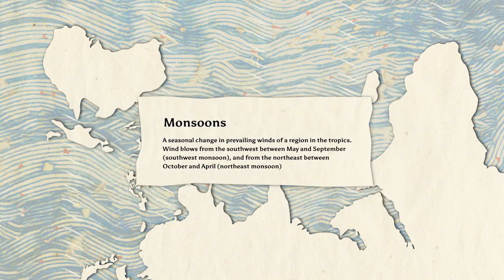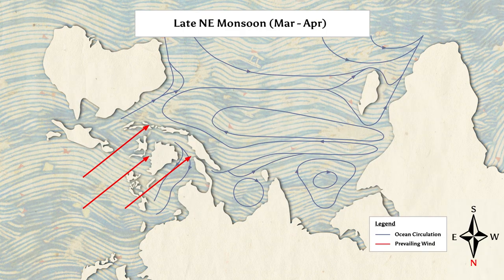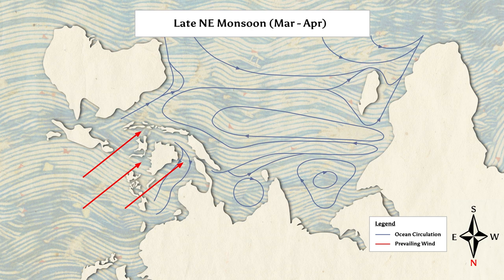These changes in wind direction shape ocean surface currents. As prevailing wind direction changes, the flow of surface ocean currents also changes.